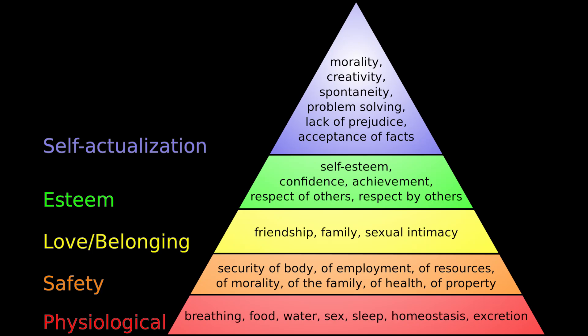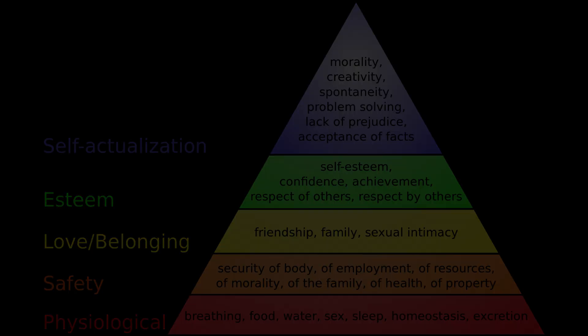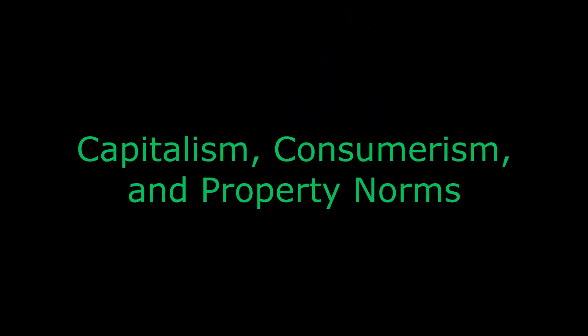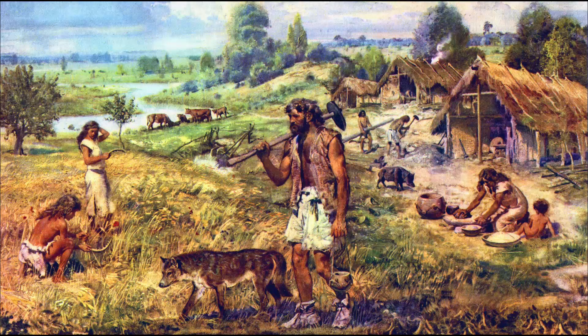To summarise: conflict between people arises from scarcity, so if you want to reduce conflict and unrest, reducing scarcities of things like people's basic needs is a good way to do that. Since the establishment of property rights during the Neolithic revolution, humans have lived in environments of relative scarcity, and this is reflected in past and present socio-economic models.